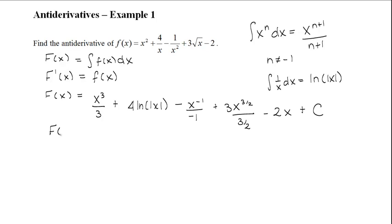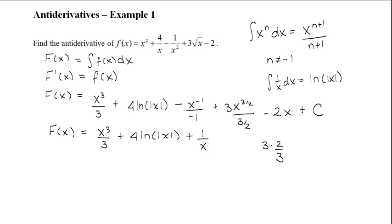Now we simplify. The first and second terms can't be simplified further. For the third term, we can simplify in two ways: the two negatives cancel to give a positive, and x to the negative 1 can be written as 1 over x, so this term becomes plus 1 over x. For the fourth term, 3 divided by 3 over 2 — dividing by a fraction means we flip and multiply, so 3 times 2 over 3, the 3's cancel, leaving 2. So we get plus 2 times x to the power of 3 over 2. The last term stays as minus 2x, and remember to add your integration constant.